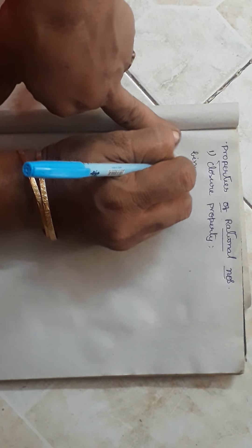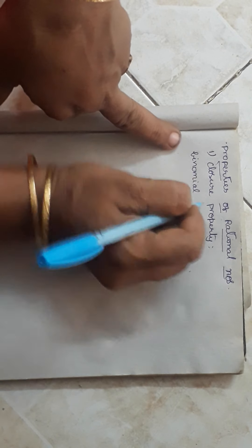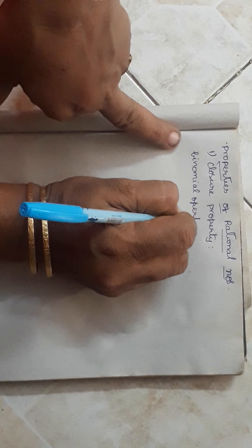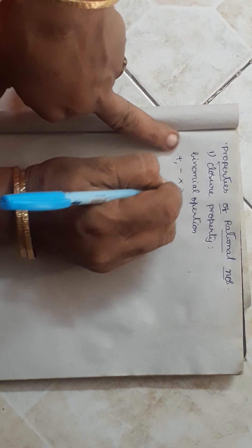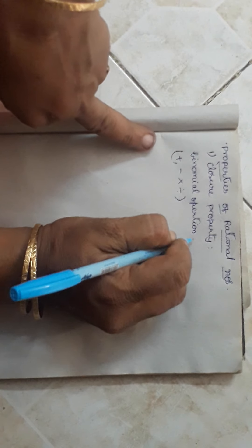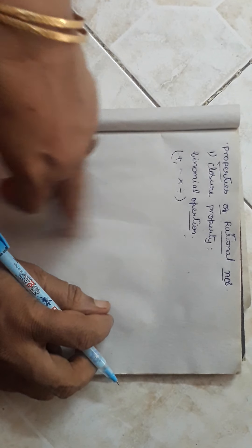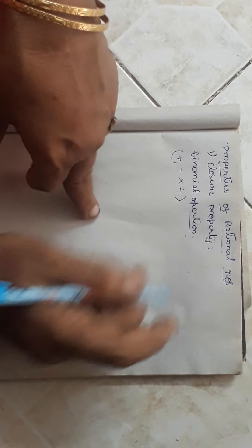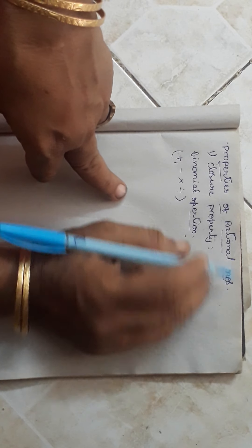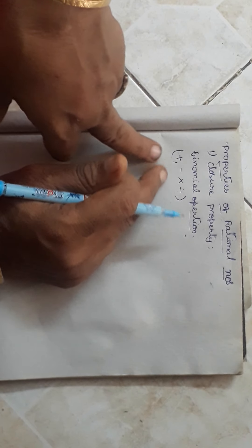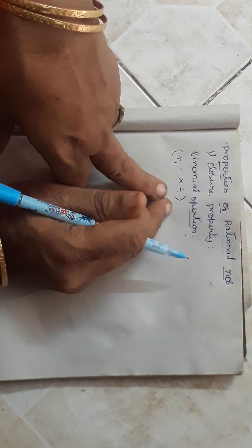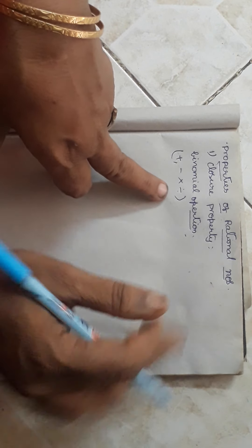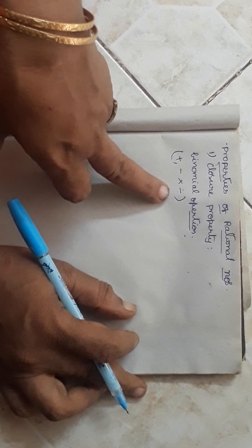The four binary operations are addition, subtraction, multiplication, and division. Let us check if closure property is applicable in the set of rational numbers under addition, subtraction, multiplication, and division separately. If they are satisfied we can say that it is a property, otherwise it is not.